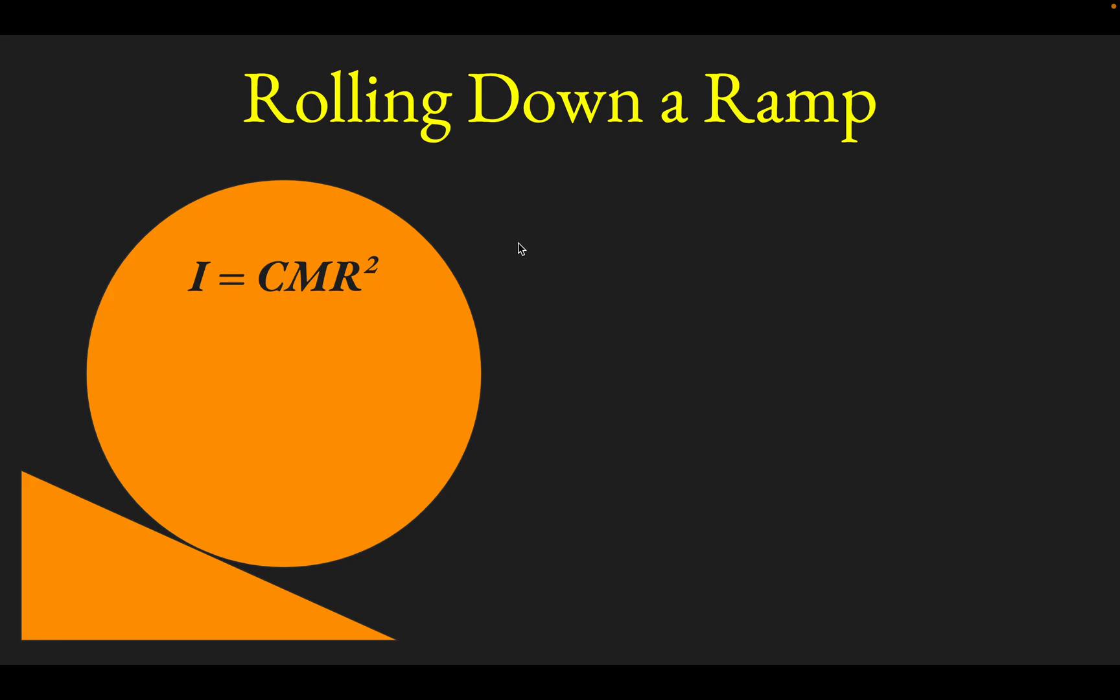So what we should do first to look at how this thing is going to move is let's draw some forces. You'd have the weight of the object acting down from its center of mass. You'd have a normal force from the ramp that it's rolling on, acting perpendicular to the surface or normal to the surface.